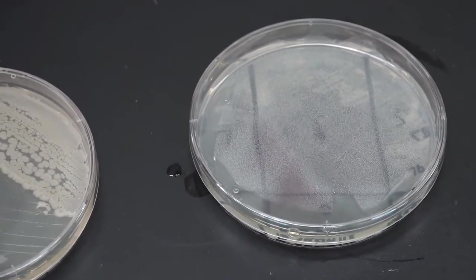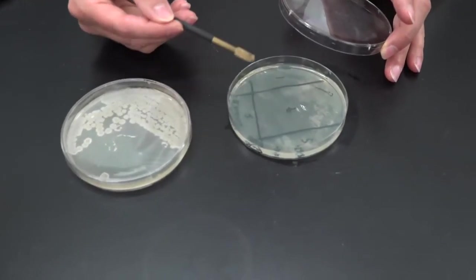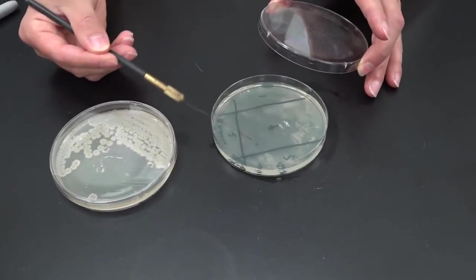Sterilize your loop one final time. And then you're going to streak from three and spread throughout all of quadrant four. Use up all the plate space you have.